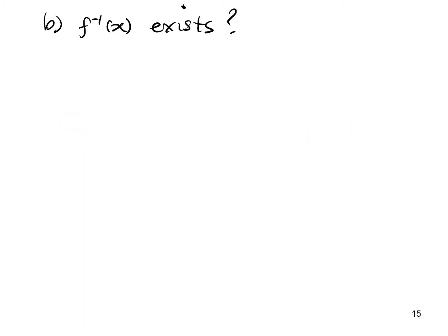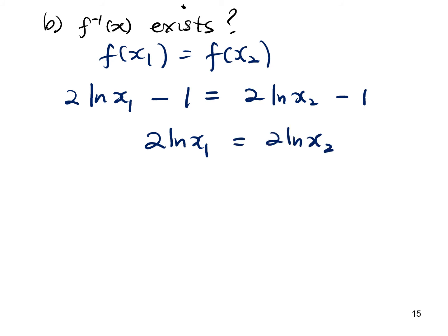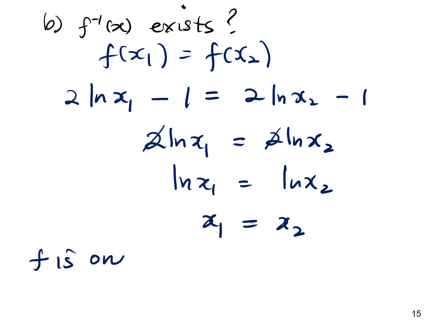To show f inverse exists, use the algebraic method: assume f(x₁) = f(x₂). Then 2 ln(x₁) − 1 = 2 ln(x₂) − 1. Cancelling −1 from both sides: 2 ln(x₁) = 2 ln(x₂), so ln(x₁) = ln(x₂), giving x₁ = x₂. Therefore f is a one-to-one function, and f inverse exists.